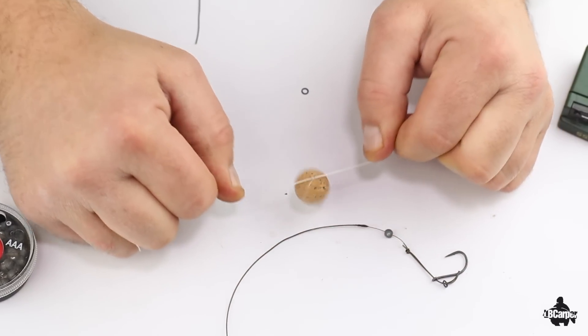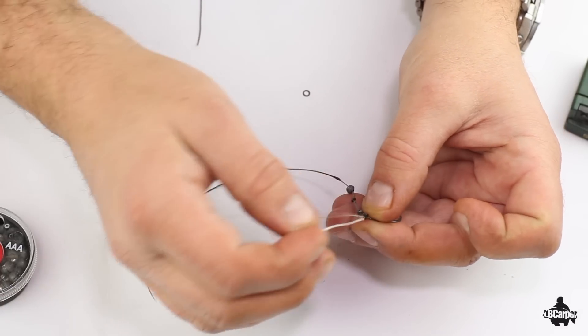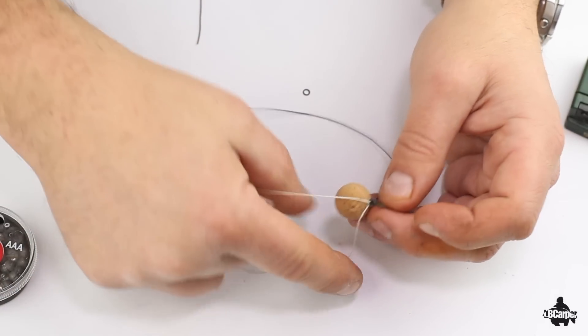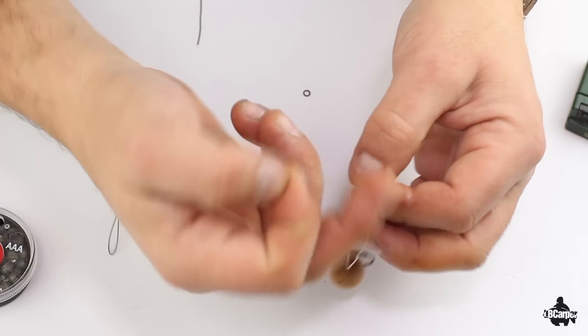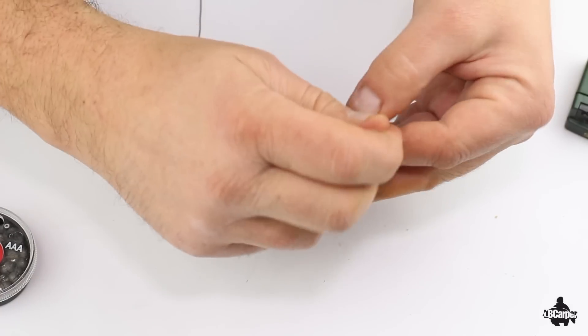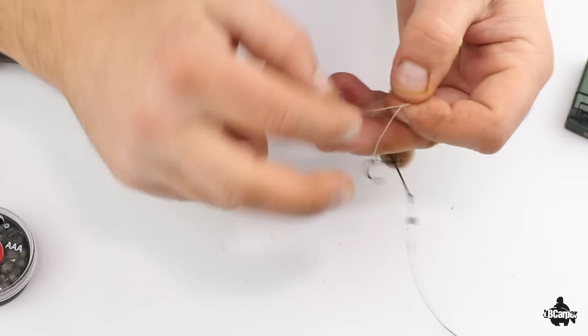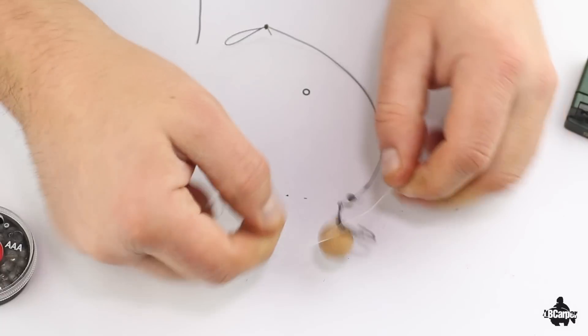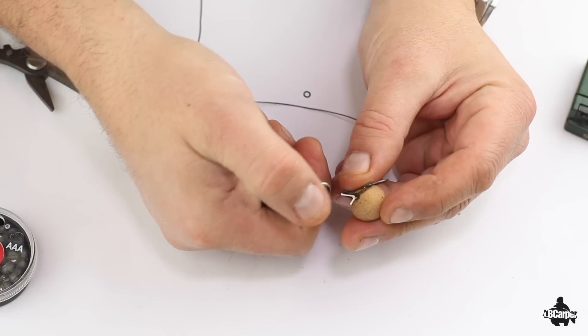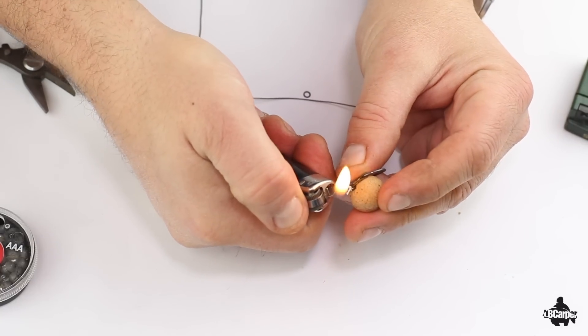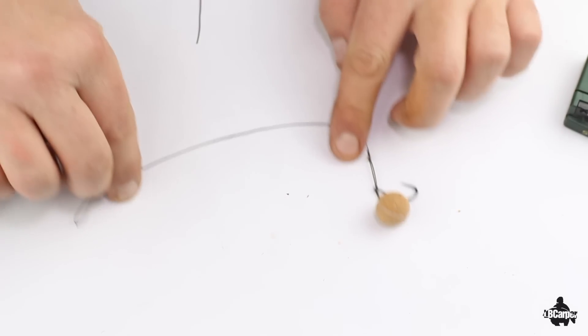Thread dental floss through your ring. Tie off three overhand knots. One, two, three like so. Trim that and blob it with your lighter, and that won't move. There you go.